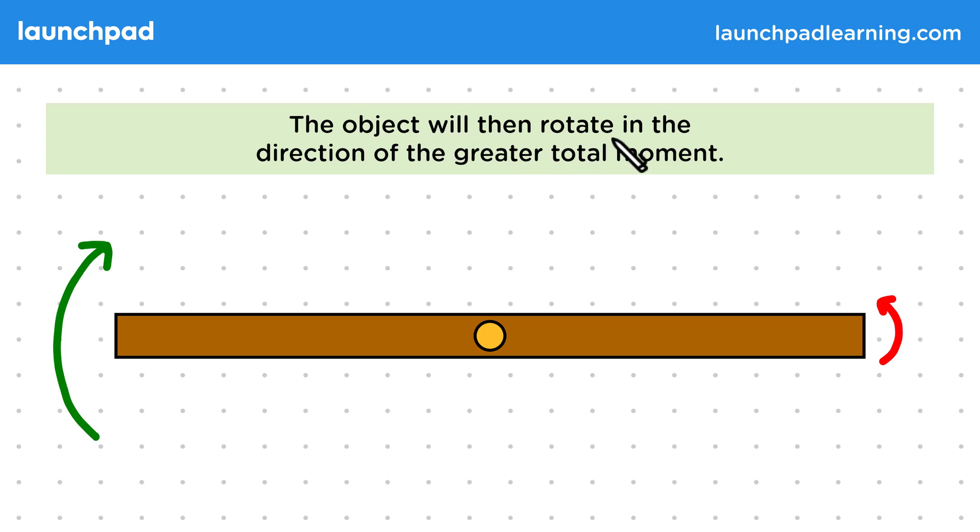The object will then rotate in the direction of the greater total moment. Again, this is similar to forces where the object moves in the direction with the largest total force. So, in this case, we have a larger total for the clockwise moments, which means that the plank will rotate clockwise.